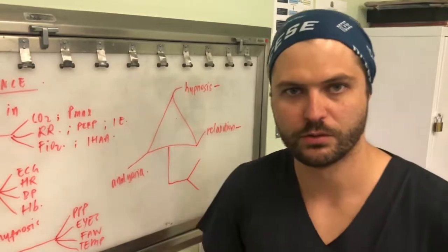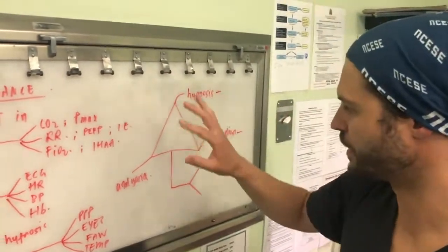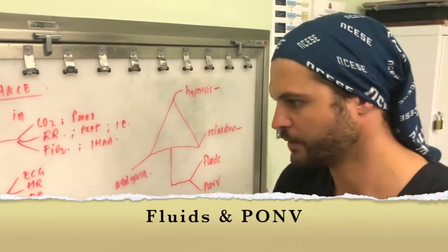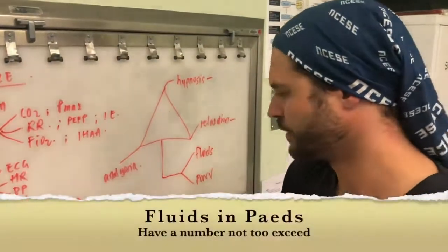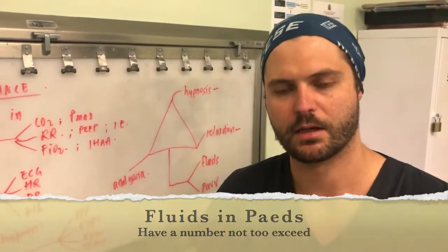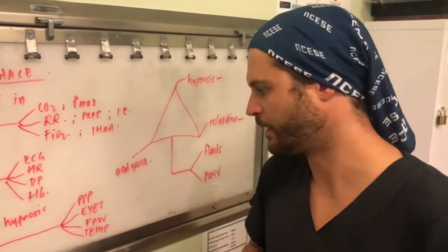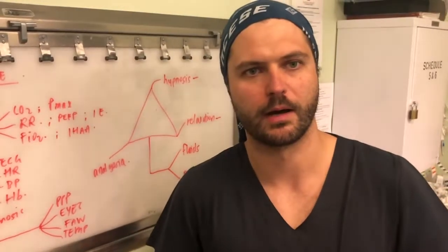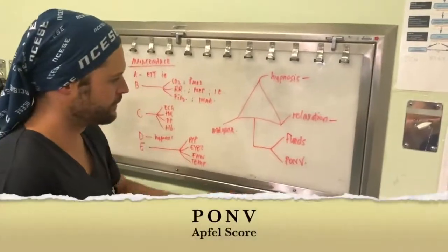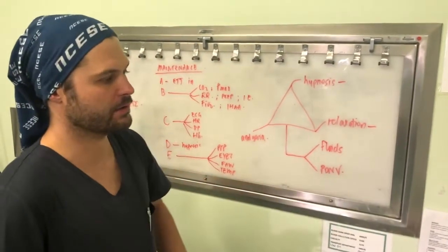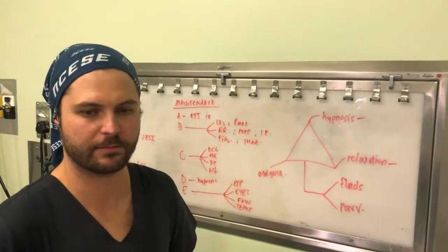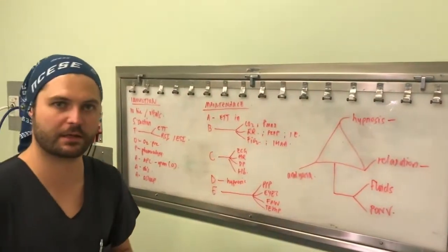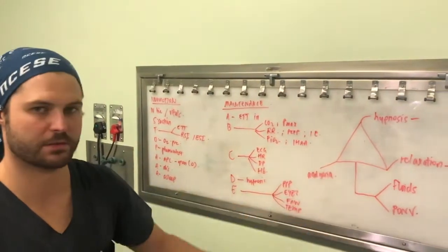Coming off the maintenance phase, I think of two aspects not included in the triad: fluids and post-operative nausea and vomiting. Fluids in adults are not the same as in children — in children, always make sure you have a number in your head not to exceed, as you do not want to overload the patient. Patients who are hypovolemic might need more fluids than others. For post-operative nausea and vomiting, we can use the APFEL score to calculate the patient's risk and give drugs accordingly — dexamethasone or ondansetron, if your hospital has them available.